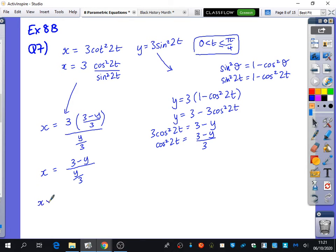And then I don't really like having this fraction down here, so I might actually multiply up by y over 3. So I will have x multiplied by y over 3 equals 3 minus y. What could I do to both sides of the equation now, maybe? I would probably multiply by 3. So I will have xy equals 9 minus 3y.